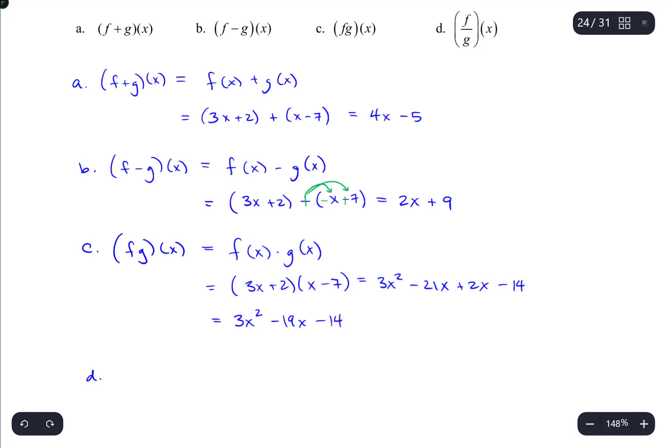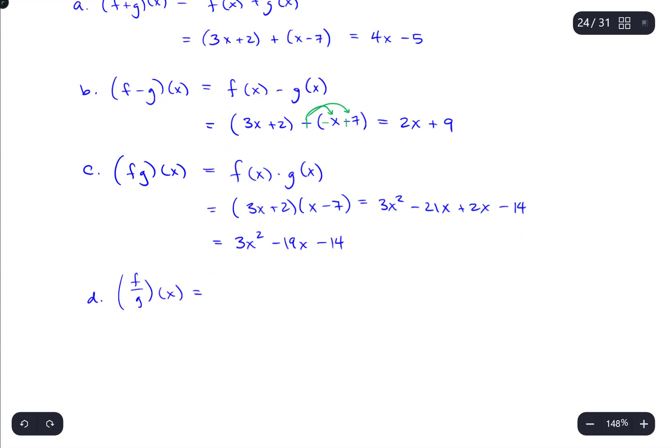And lastly, what we want is these two functions divided. So f divided by g of x. Well, f(x) being 3x + 2 and g(x) being x - 7, there's really not a whole lot else we can do, except just leave it as is.